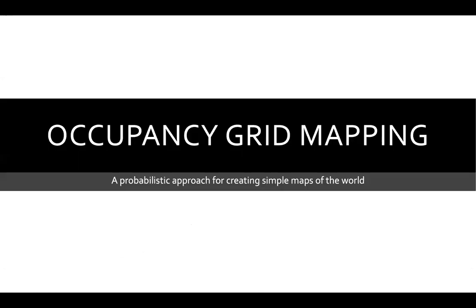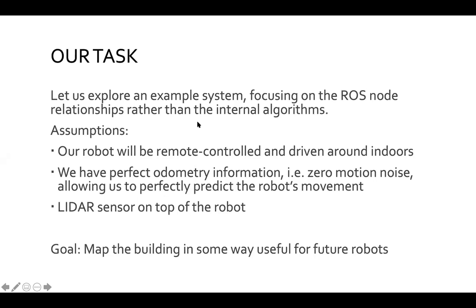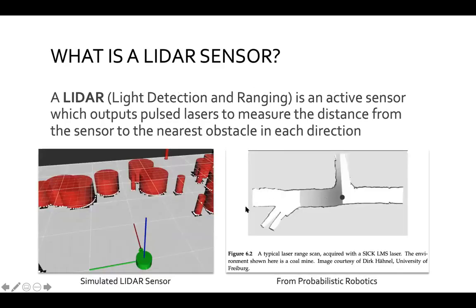Now let's look at a concrete example: occupancy grid mapping, a probabilistic approach for creating simple maps of the world. Our task: explore an example system focusing on ROS node relationships rather than internal algorithms. Assumptions: we're remote controlling a robot driving indoors, we have perfect odometry (zero motion noise), and a LIDAR sensor on the robot. Our goal: map a building in a way that tells us where the robot can and can't drive.